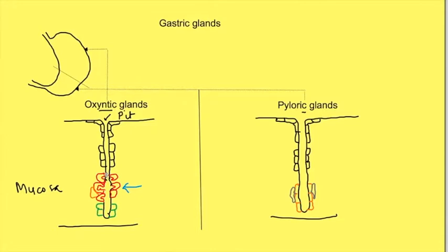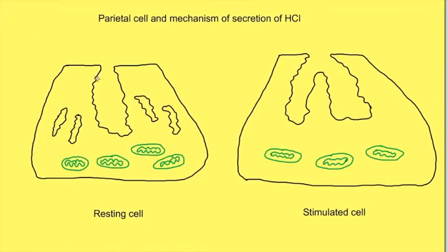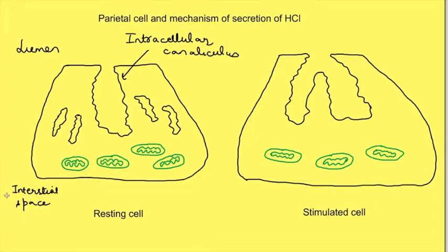If you see these cells, the lumen of the gland continues as intracellular canaliculi of the parietal cell. If we magnify the cell, the top portion shows the lumen of the gland and the bottom portion shows the basolateral membrane and the interstitial space. Along the basolateral membrane, there is blood flow going on.